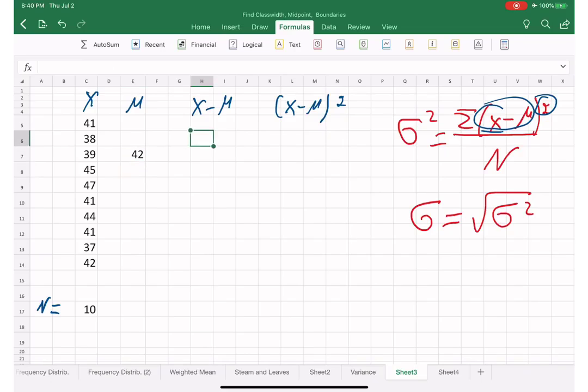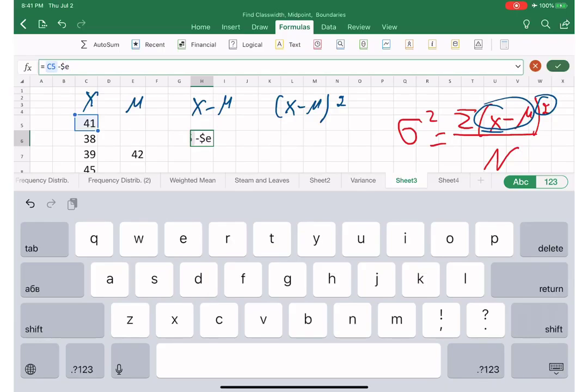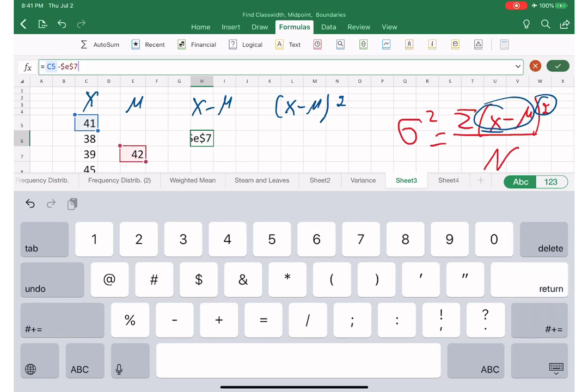So then we need to do x minus mu. That is going to be equal sign, x minus this one. Now, because I'm going to subtract from every single x, take off this mu, I want this mu to be frozen, always separate as E7. Therefore, I'm going to put here dollar sign so it will freeze. E dollar sign 7. There we go.